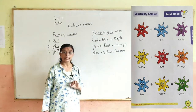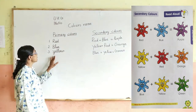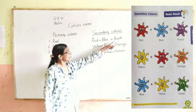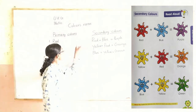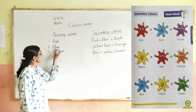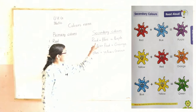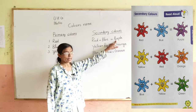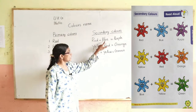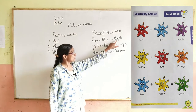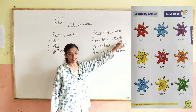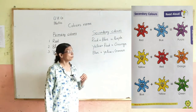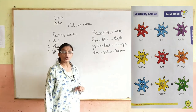Secondary colors. Secondary colors. In this lesson, we are learning about secondary colors. Red is a primary color. Blue is a primary color. Red and blue mixed together gives us purple.